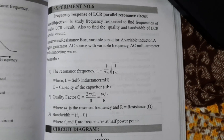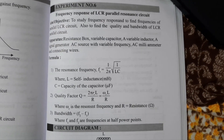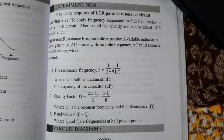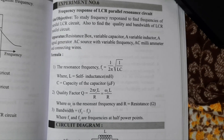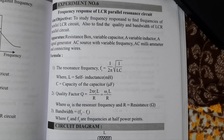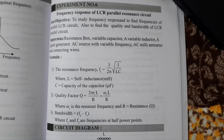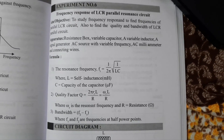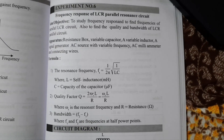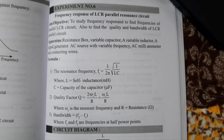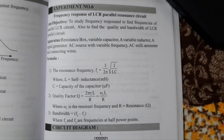The apparatus required here are a resistance box, variable capacitor, variable inductor, signal generator, AC source with variable frequency, AC milliammeter, and connecting wires. The apparatus has all these equipments within it, so it is not necessary to connect them separately.